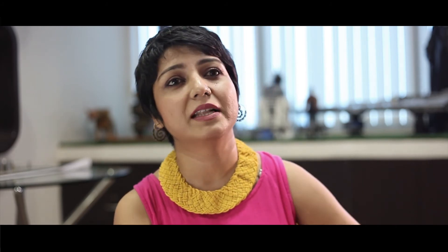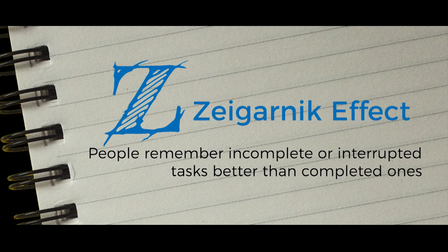Have you ever wondered why cliffhangers work so well? Or why you can't just stop watching that series on Netflix — just one more episode? It's the oldest trick in the entertainment business. You tune in week after week, or binge watch, because the unresolved story is sticking away at the back of your mind. In the 1920s, Bluma Zeigarnik conducted studies to establish that incomplete tasks are easier to remember than completed ones.